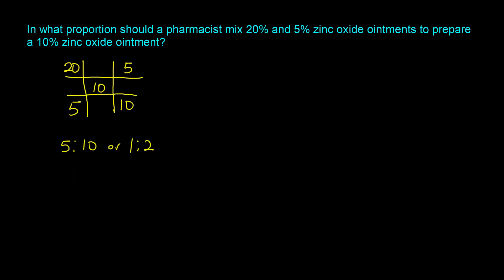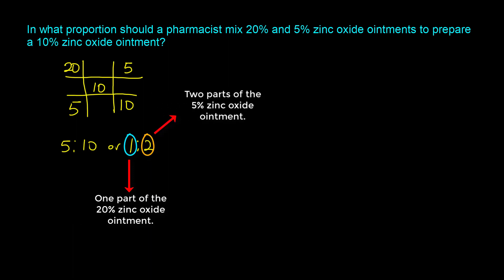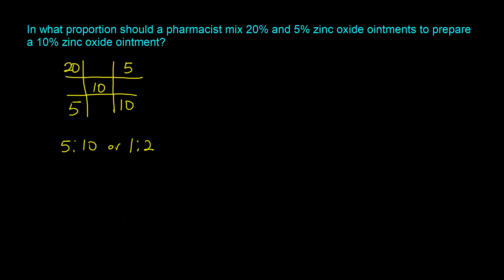So one part of the 20% zinc oxide ointment mixed with two parts of the 5% zinc oxide ointment gives you your 10% zinc oxide ointment. Now that we've reviewed how to use the allegation method for two components, let's look at examples where you apply it to three components.